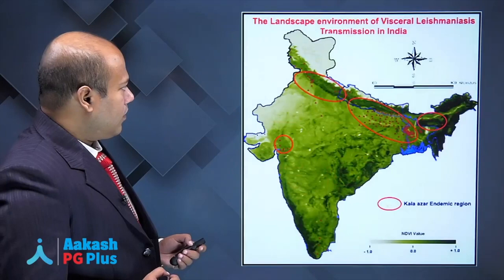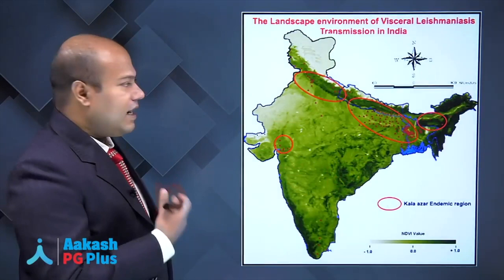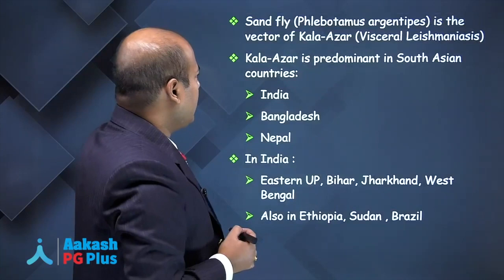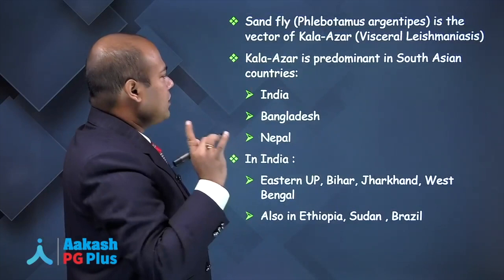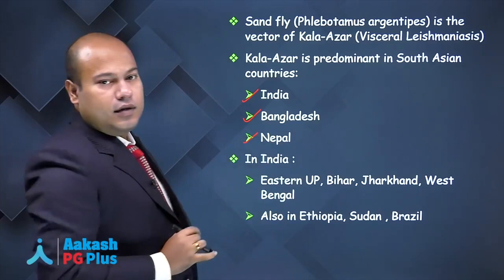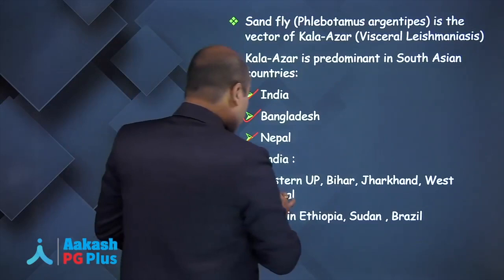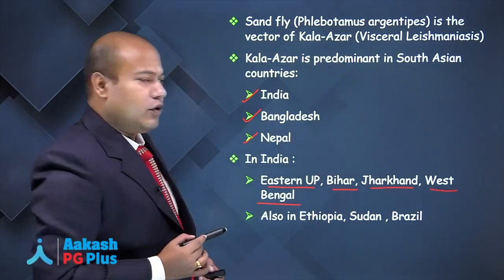In India, Kalazar mainly occurs in the eastern part of Uttar Pradesh, Bihar, Jharkhand, and West Bengal. Sandfly is the vector. Kalazar is predominant in South Asian countries including India, Bangladesh, and Nepal. This geographic spread is called the place distribution of the disease.